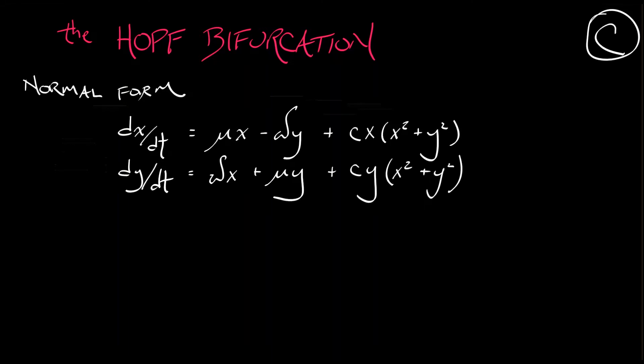Now, we've got a bunch of different variables going on here. c is a non-zero constant, omega is a non-zero constant, and mu, like always, is our parameter.